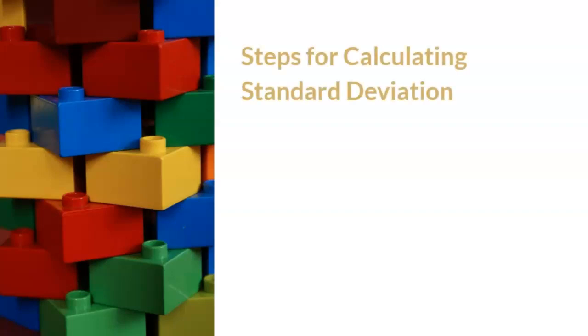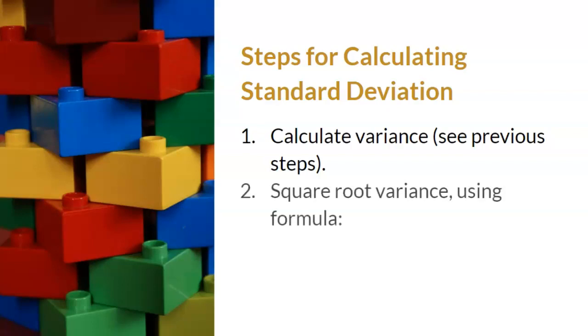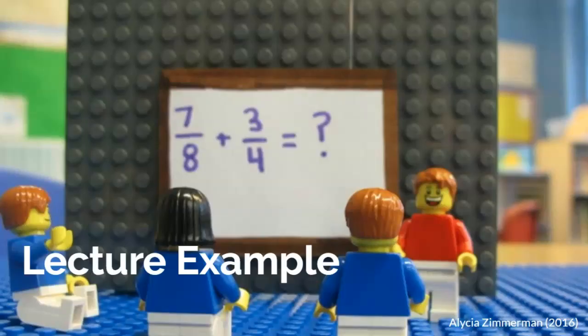Recall that we need to calculate variance first in order to calculate standard deviation. Step 1: calculate variance using the previous steps. And step 2: square root variance to calculate standard deviation. When you put the steps together, you have the formula for standard deviation. Now that we have reviewed the rules and steps to calculating variance and standard deviation, are you ready to practice your new knowledge? I have one practice example for you to review.